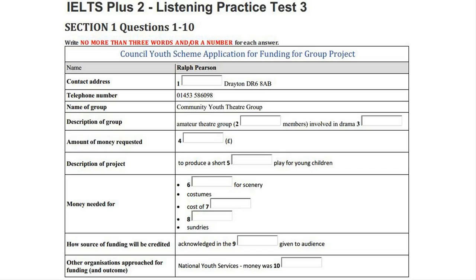You now have some time to look at questions four to ten on page 66. Now listen and answer questions four to ten. Now the next bit is about the project itself — what we're applying for funding for. So first of all they need to know how much money we want. The maximum's 500 pounds. I think we agreed we'd ask for 250, didn't we? Okay, there's no point in asking for too much — we'll have less chance of getting it.